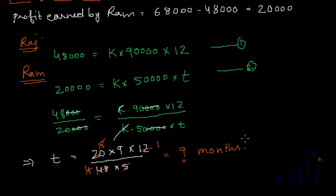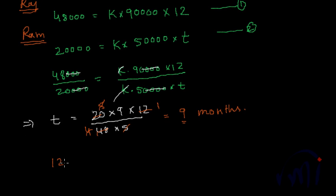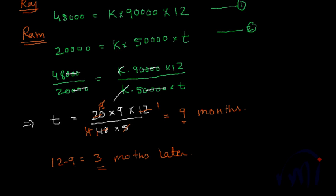Ram was invested for 9 months in the business, which means he actually joined 12 minus 9 = 3 months later after Raj started his factory. This was the solution for the problem, and I think this has helped consolidate your concept about partnerships and profit shares. In the next video, we have a slightly more complicated problem with 3 people, some withdrawing part of their investment and some increasing it mid-year. Bye-bye!